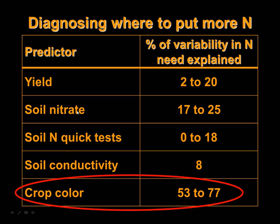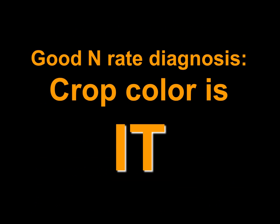Soil nitrate, sometimes in zones and sometimes in large sets of small plot experiments, was up in the 17 to 25 percent range — so that's decent, but it's a lot of work to do variable rate based on that. Soil Lam quick test had zero to 18 percent. Soil conductivity, we only had one study and it was 8 percent. Color was 53 to 77 percent. It really stood out as being much more reliable in diagnosing where you need more and where you need less, and I think this has application in a whole range of crops and a number of different technological approaches. If you want to be accurate, as far as we know now, this is the way to go.